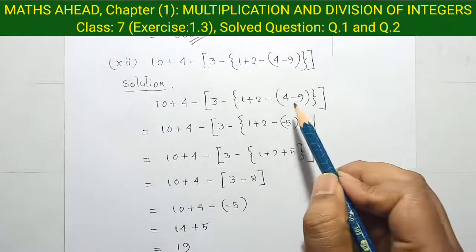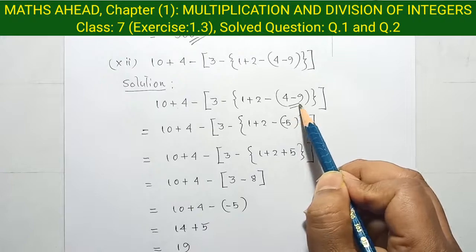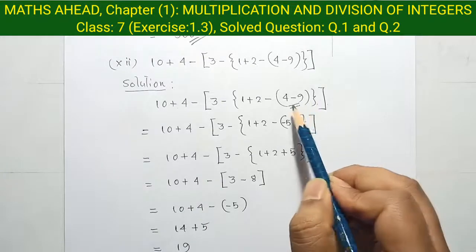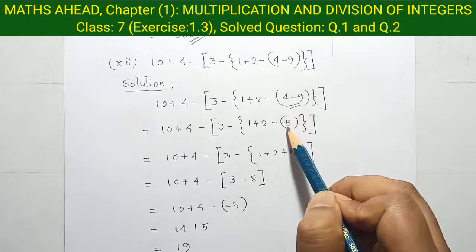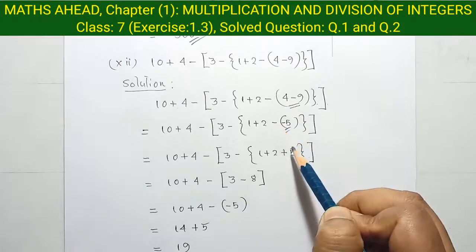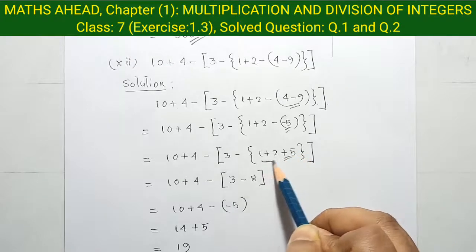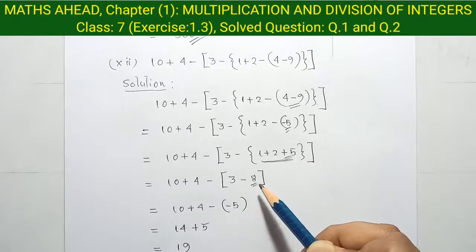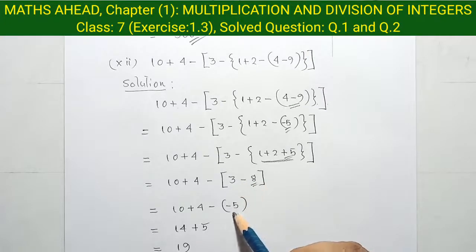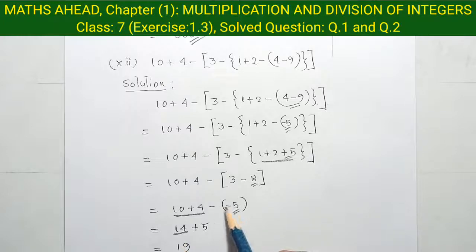Question 11 continued: we will solve this round bracket and then the curly bracket. After subtracting, value is minus 5, so minus and minus became plus 5. When value is added, value is equal to 8. After that, 3 minus 8 equal to minus 5. After that, we will add to 14, and minus and minus became plus, then value is equal to 5.